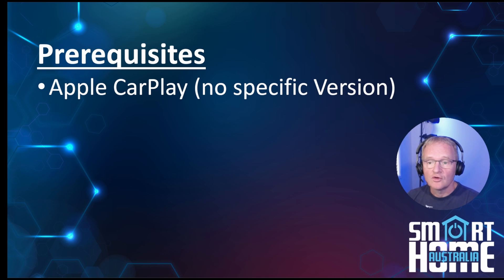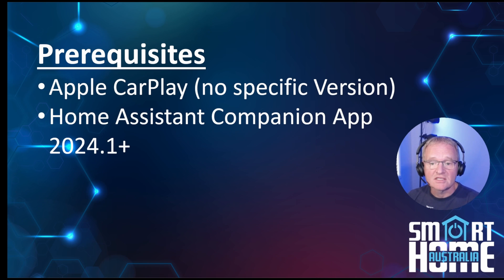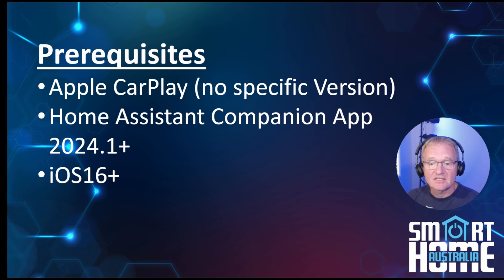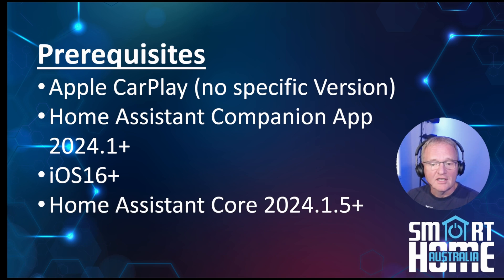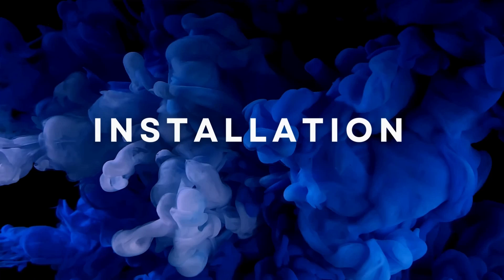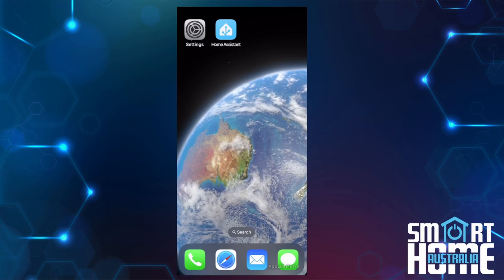There are a few obvious prerequisites. You'll need a car fitted with Apple CarPlay — the required version is manufacturer and model specific, so your mileage may vary. You'll also need the Home Assistant companion app version 2024.1 — always recommended to update to the latest for features and security. Your iPhone will need to be running iOS 16 or above, though 54% of people are already on iOS 17. You'll also need Home Assistant core version 2024.1 or newer.